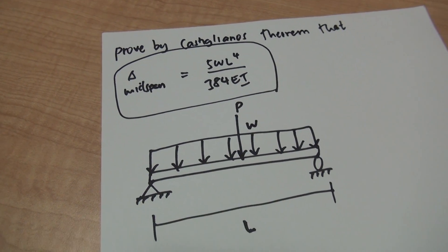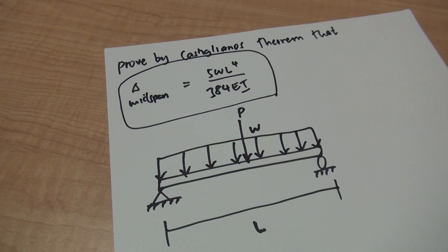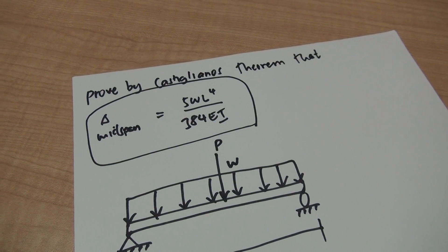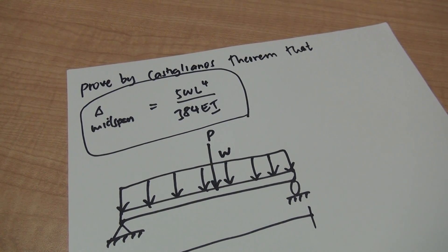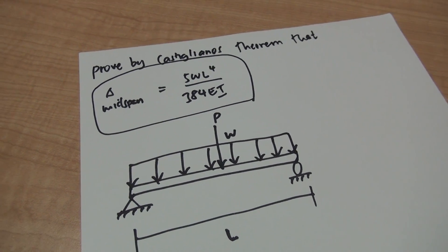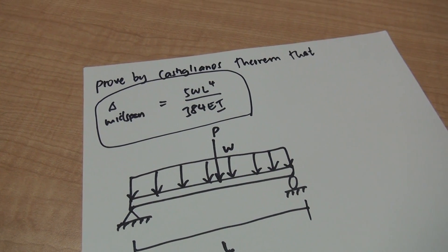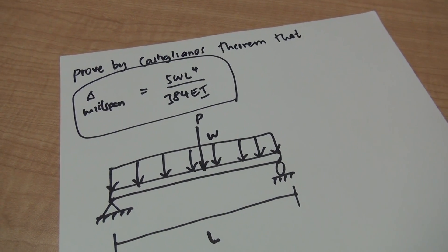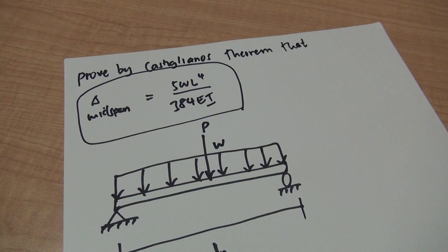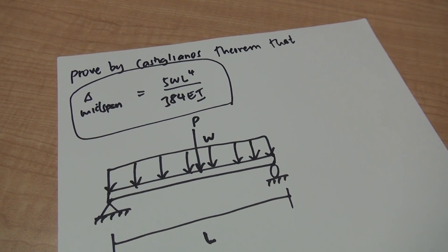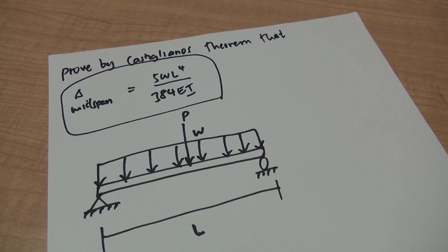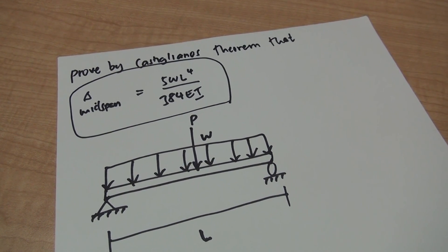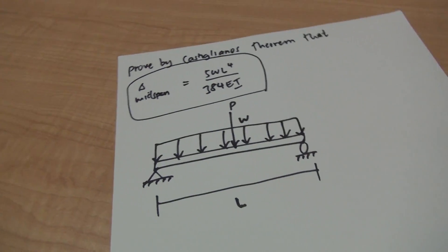Welcome to my channel. Today we're going to be discussing this problem about Castigliano's theorem. Many people have been asking me this question and saying they have trouble with it, so I thought it would be a good idea to go over it. It's a very simple problem, easy, and we can be done in just a few minutes. The question says: prove by Castigliano's theorem that the deflection at mid-span equals 5WL⁴ over 384EI.